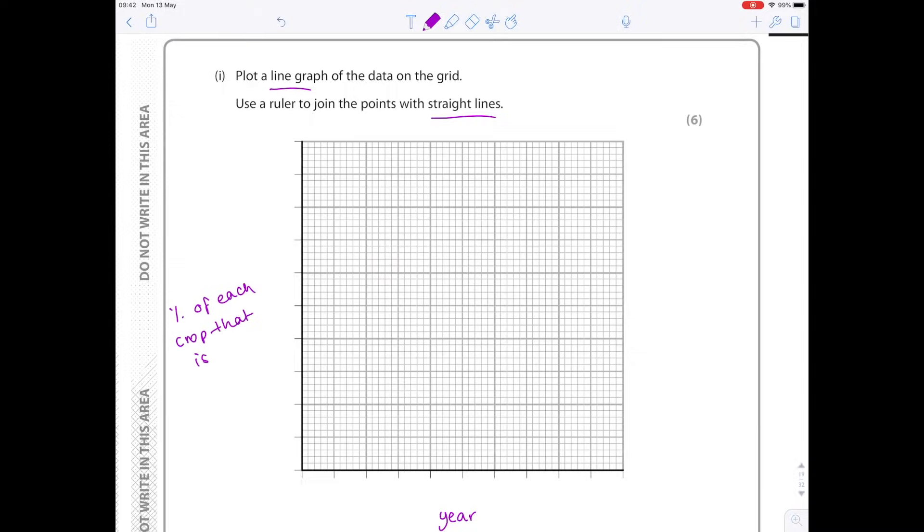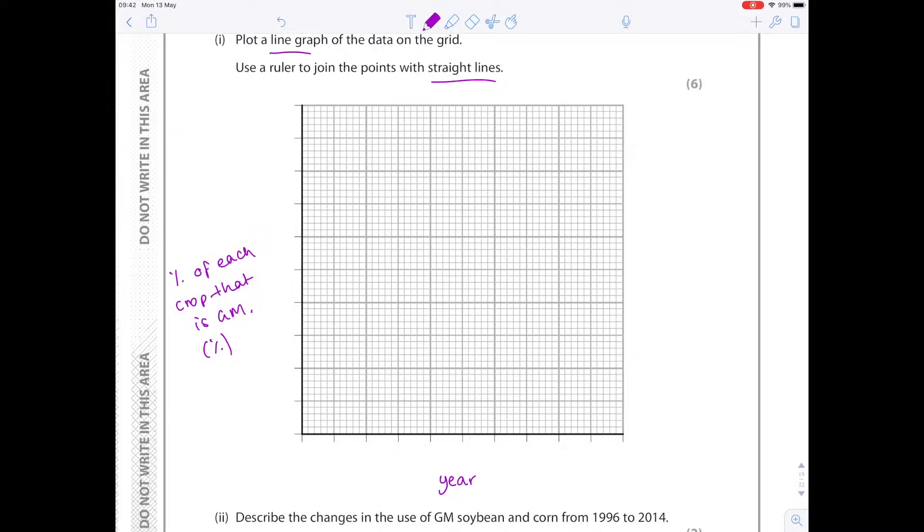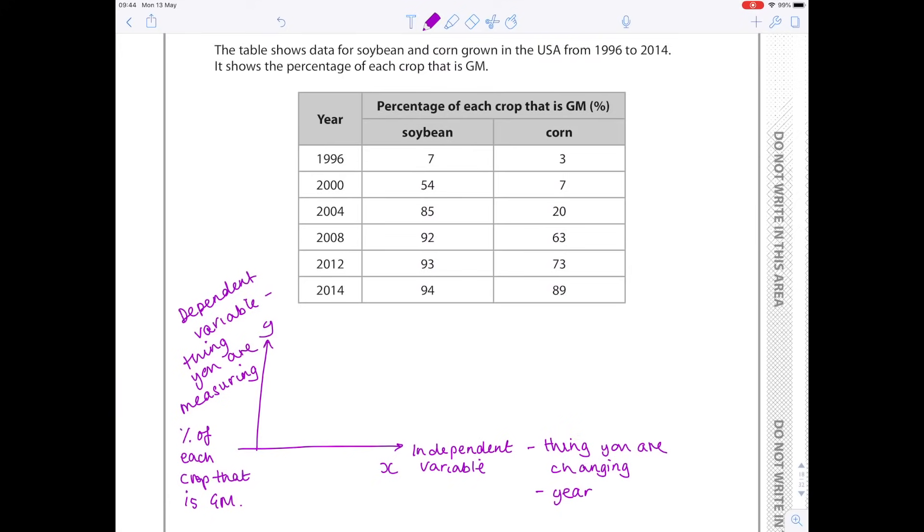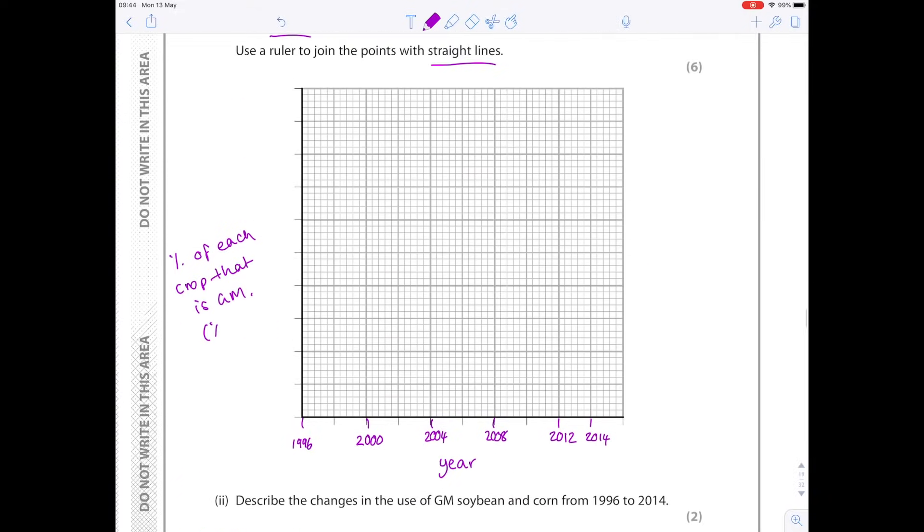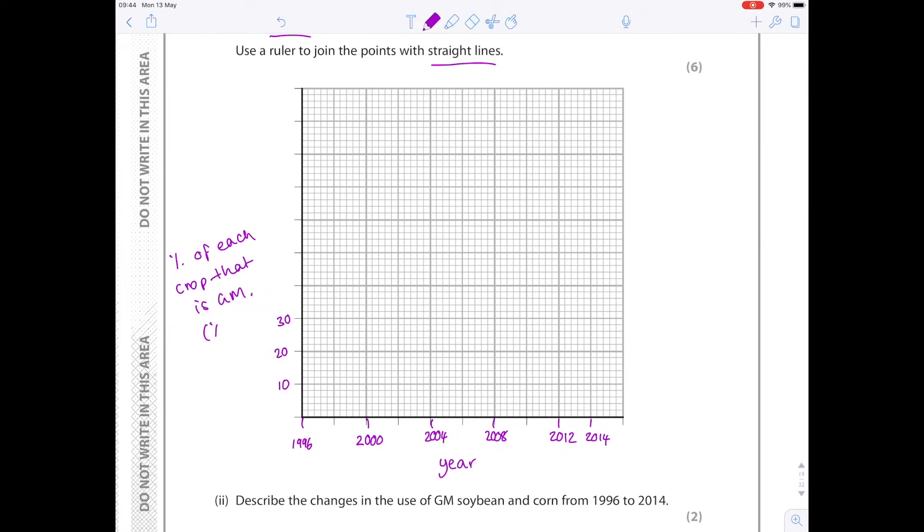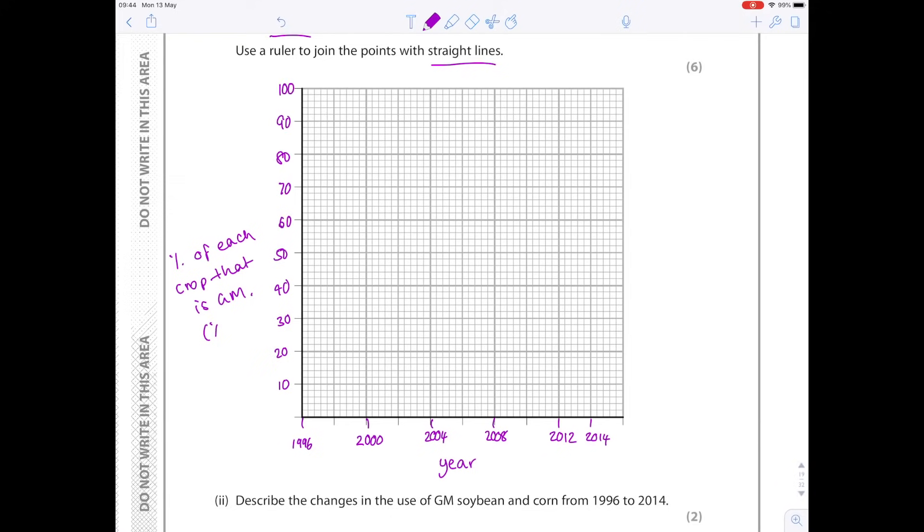So we're effectively ready to plot. Make sure you obviously use units, so I already said year here, percentage of each crop that is GM. I've just copied out the table headings here to help me with my axes. We now need to pick a sensible scale and obviously you want to occupy as much of the paper as possible. We need to go up to 2014 so I can see that this scale here will fit quite nicely, so going up in big squares by every four years. I've got to be careful because the last year is 2014 which is only two years after 2012, which is why that needs to go here. Be careful there, they're trying to trick you out. Then I need to look back, have a look at my percentage of each crop that is GM. The lowest value here is three, the highest value is 94, so I need to go up from zero to 100. So I think that would just be 10, 20, 30, 40, 50, 60, 70, 80, 90, and 100. And I'm ready to plot now.